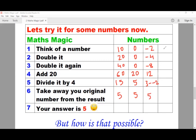Right, let's try another number — say, think of minus 5. Doubling it will give me minus 10. Doubling it again will give me minus 20. Adding 20 to minus 20 will give me 0. And from 0, if I take away negative 5, because two negatives make positives, I'll get 5.